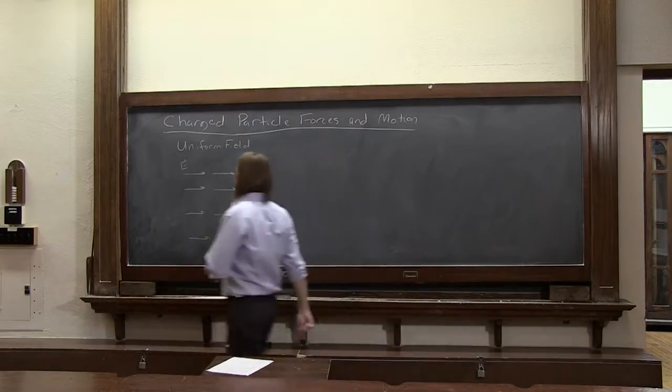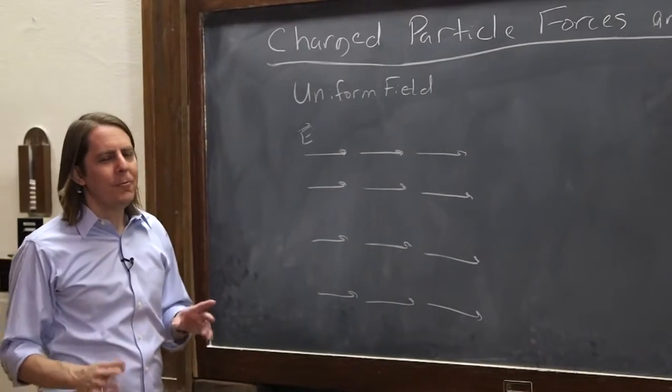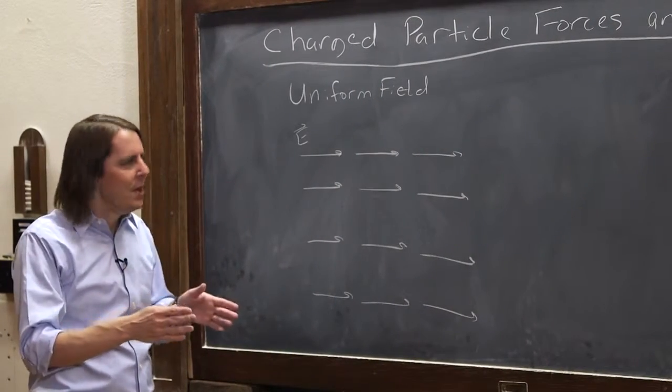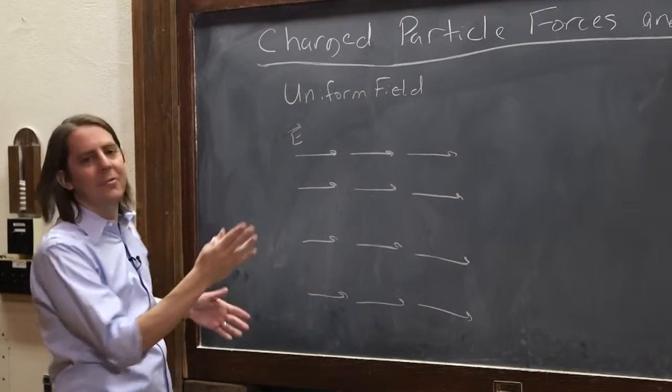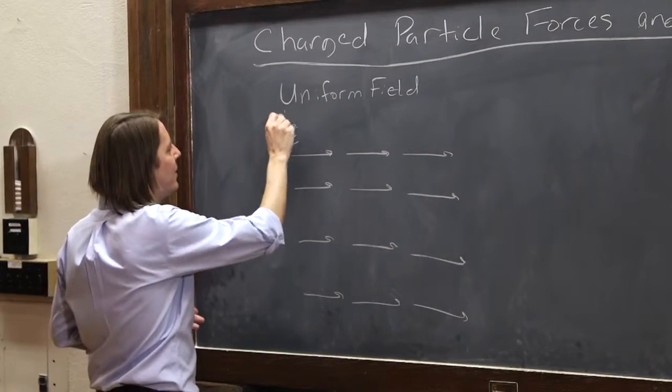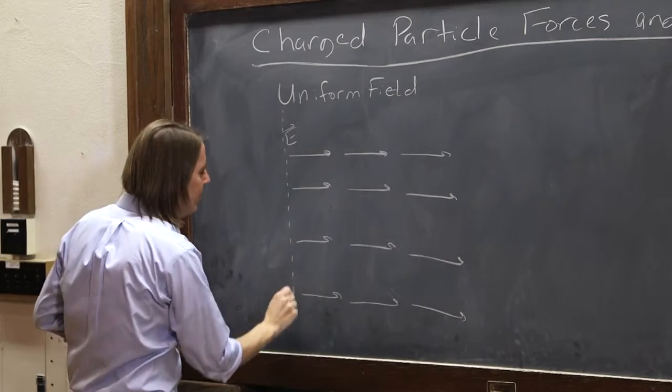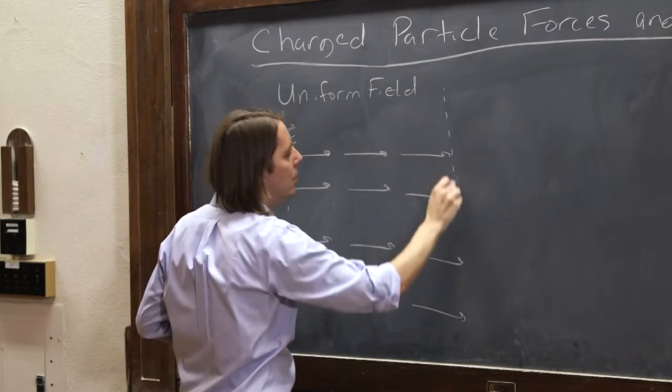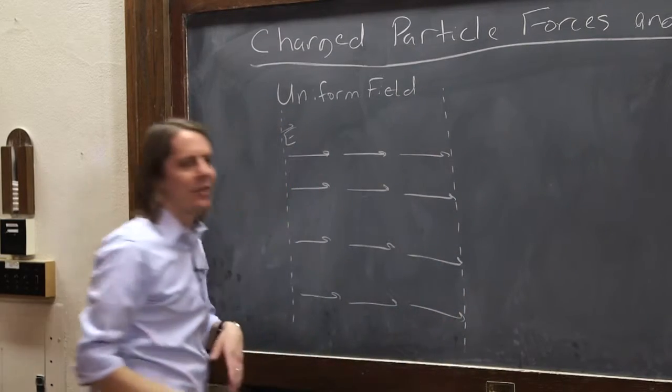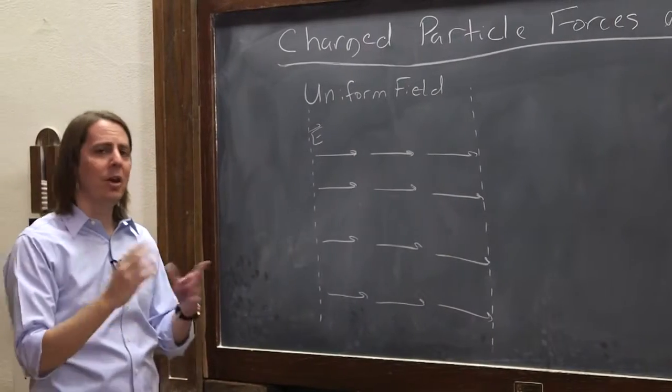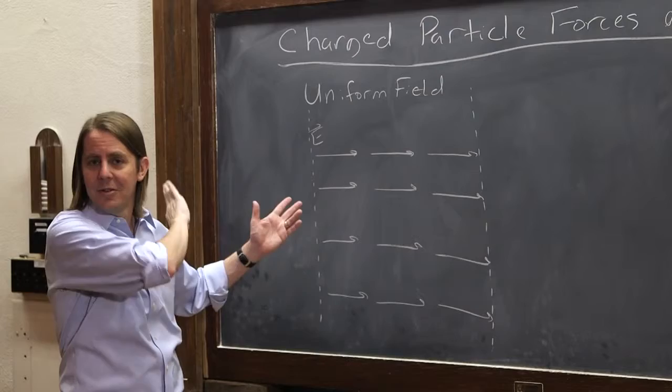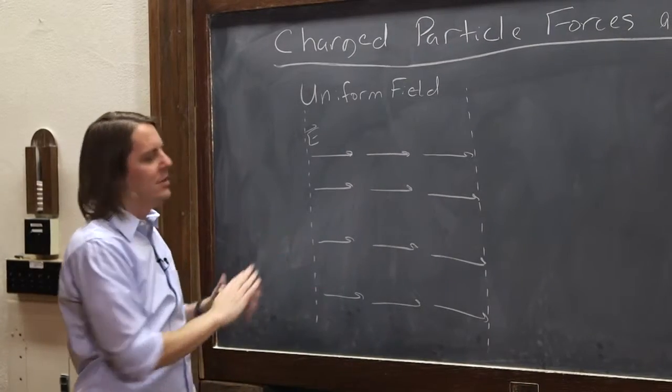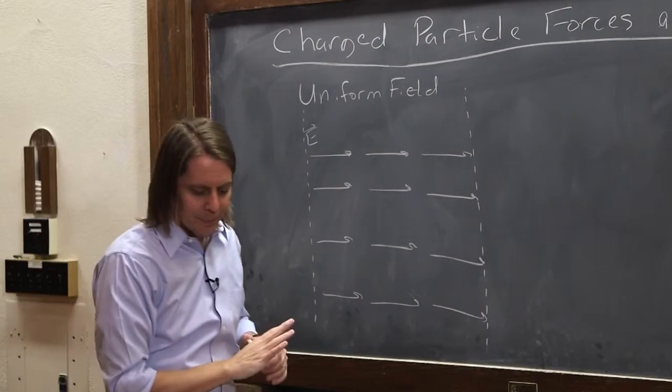But then another thing we'll do in these problems is that we'll have a uniform field but only in a certain region. So I might say a uniform field exists on the positive x-axis, or something like that. And what we're saying there is that in some region of space, we have a uniform field, but outside the region we don't. So we play around a lot with uniform fields. We don't worry about how they were created. That's somebody else's problem. When we're doing these problems, we often just say there is a uniform field.